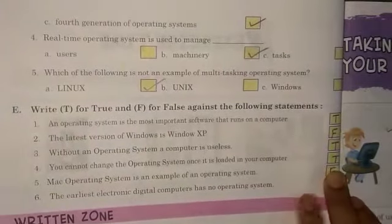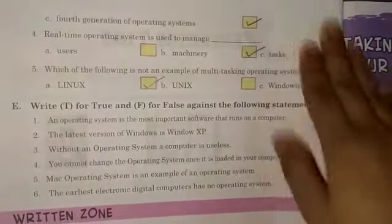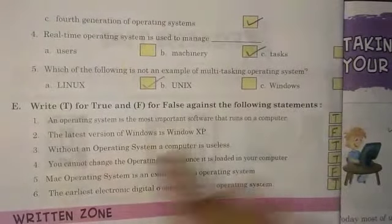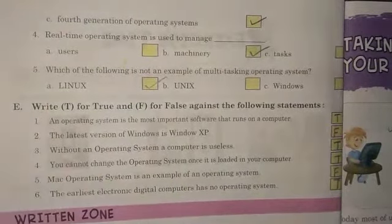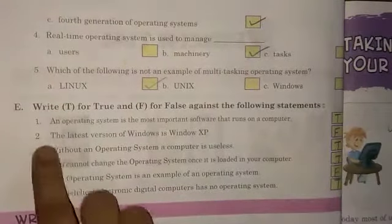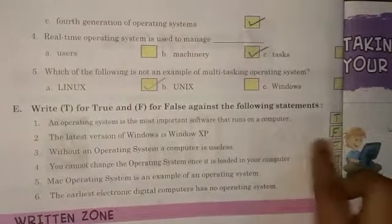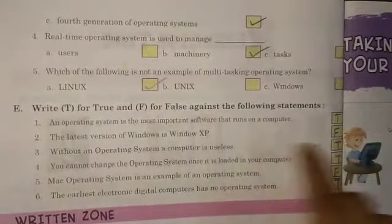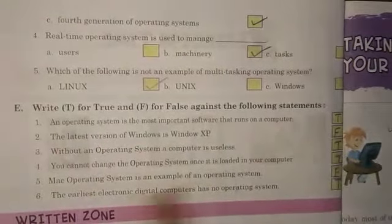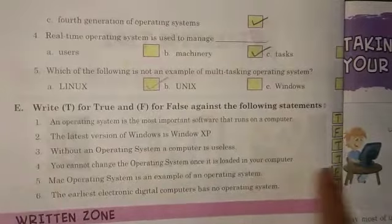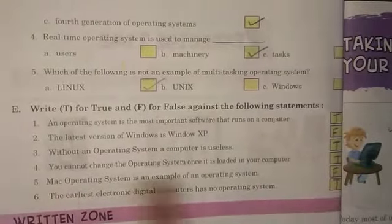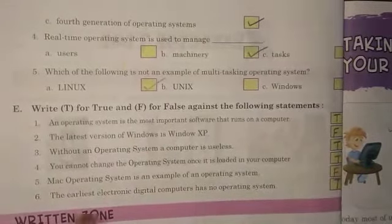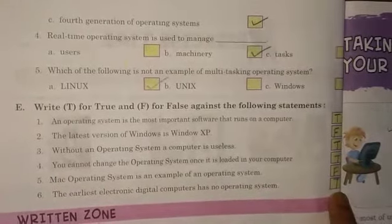True, False. No. 1 — True. No. 2 — False. No. 3 — True. No. 4 — True. No. 5 — False. No. 6 — True.